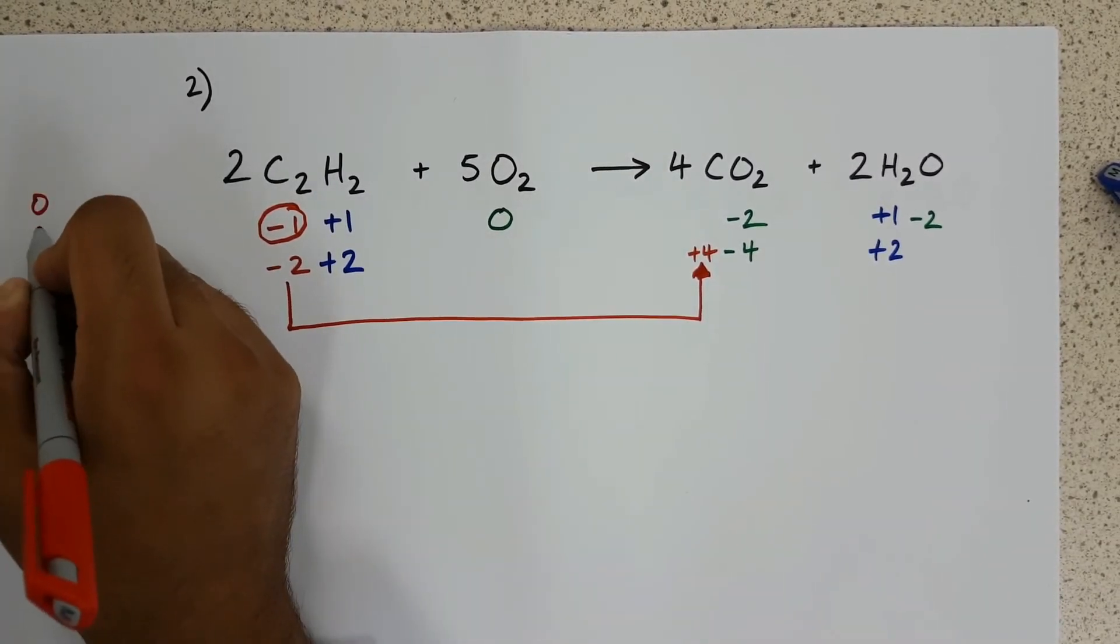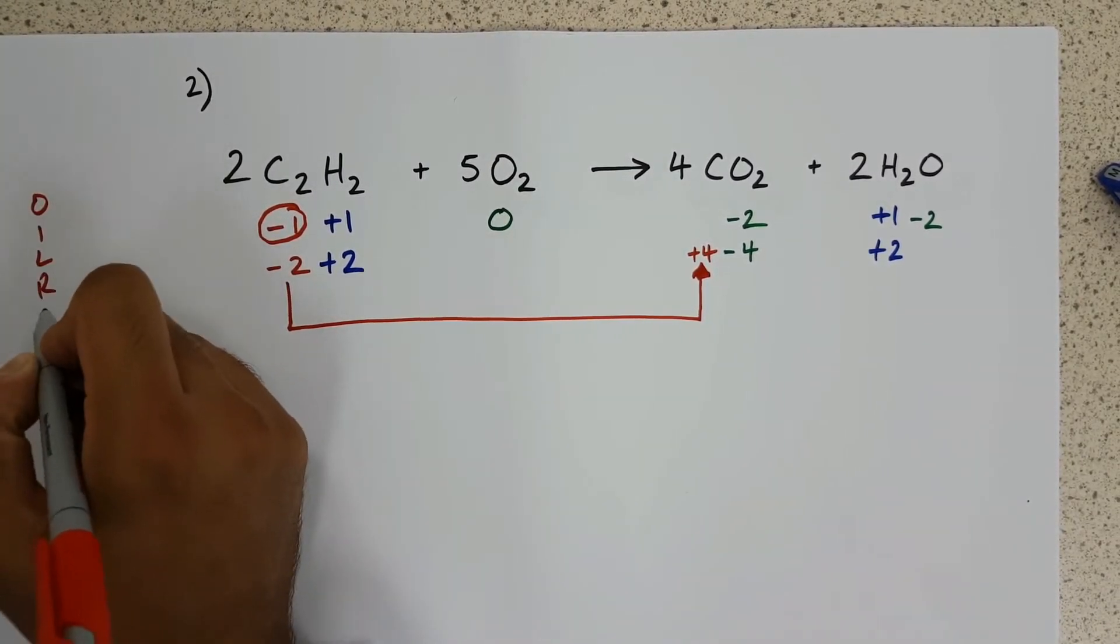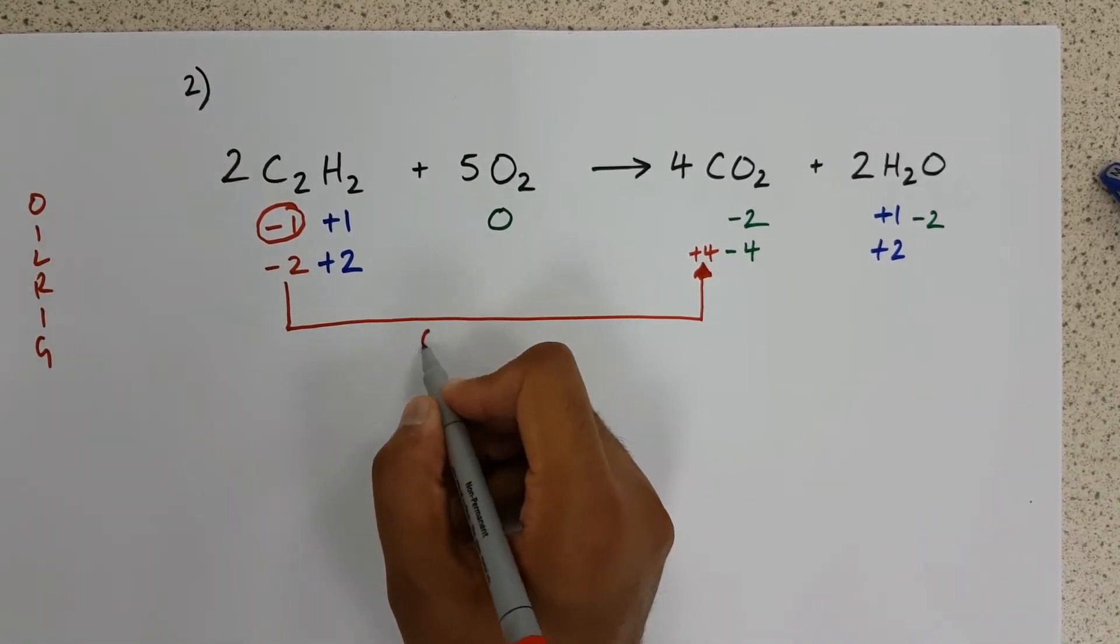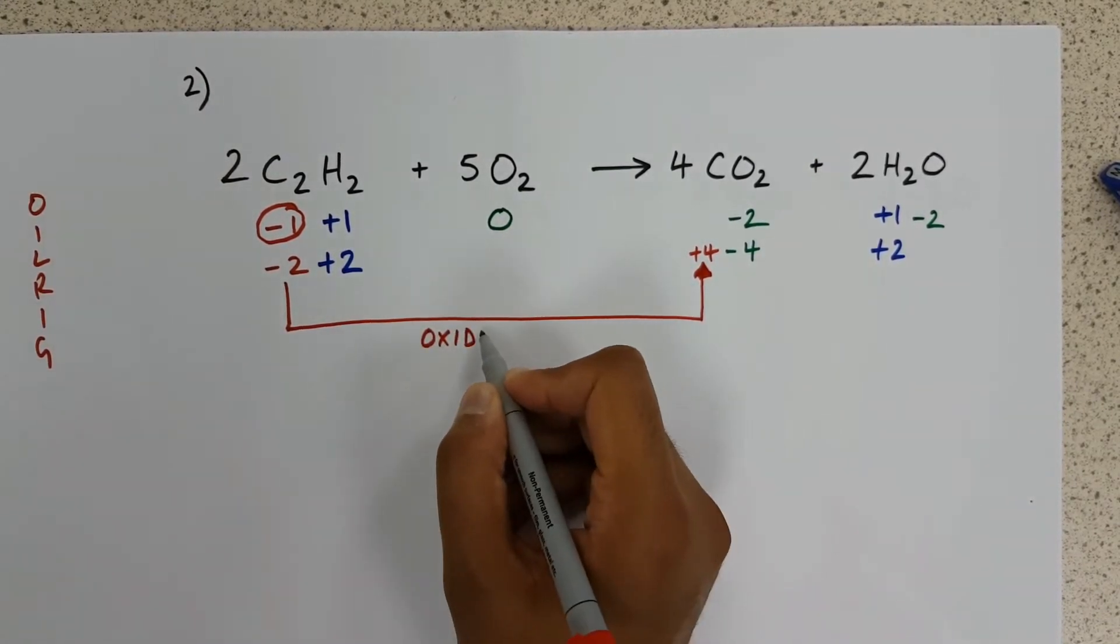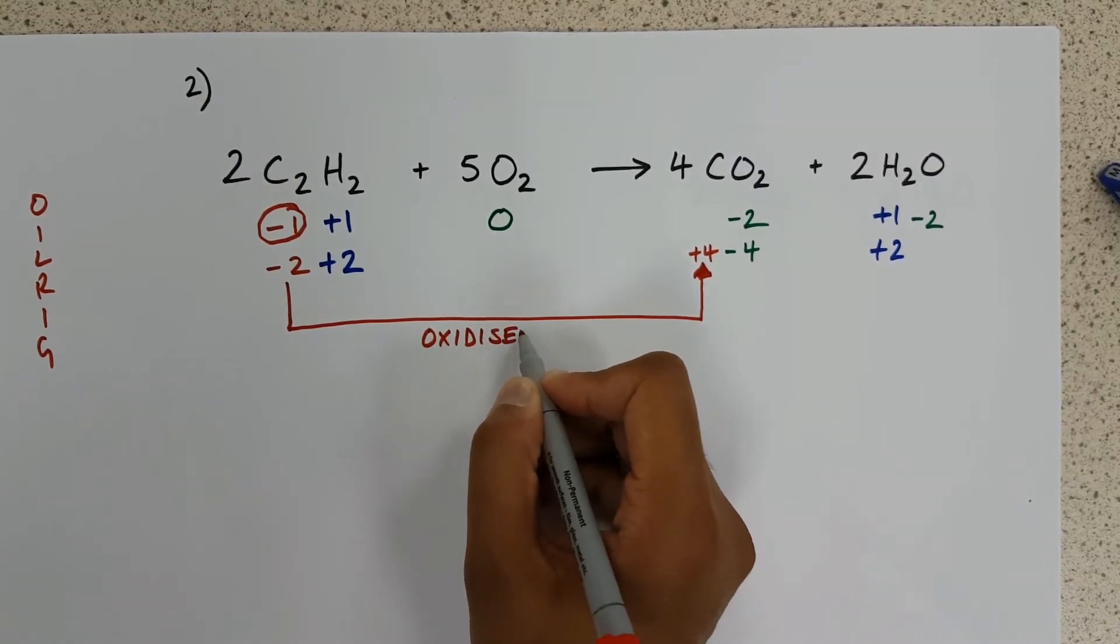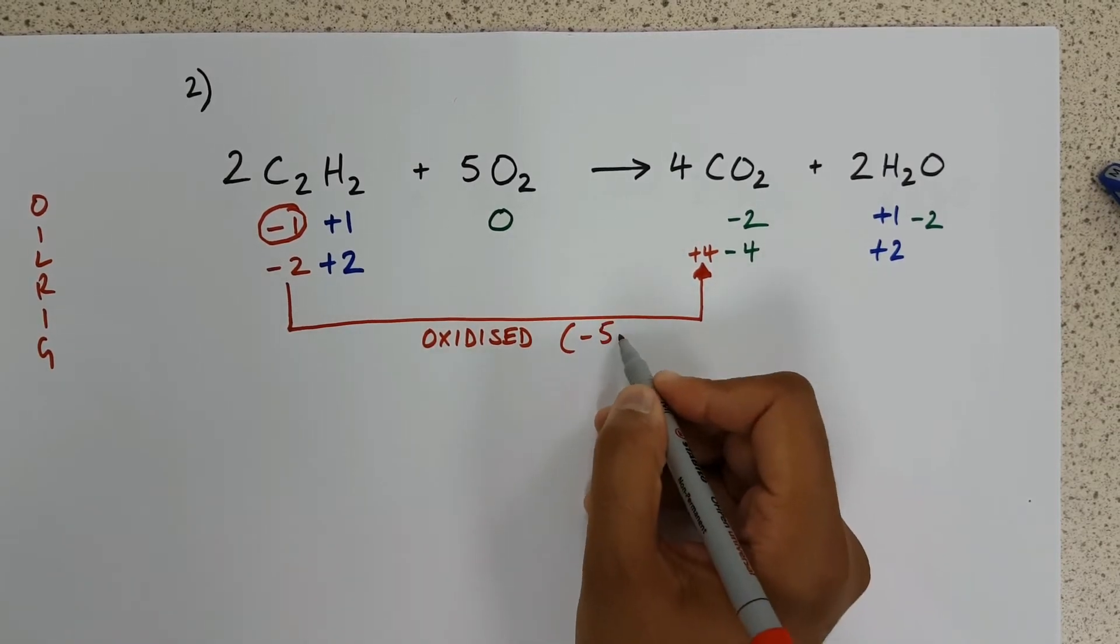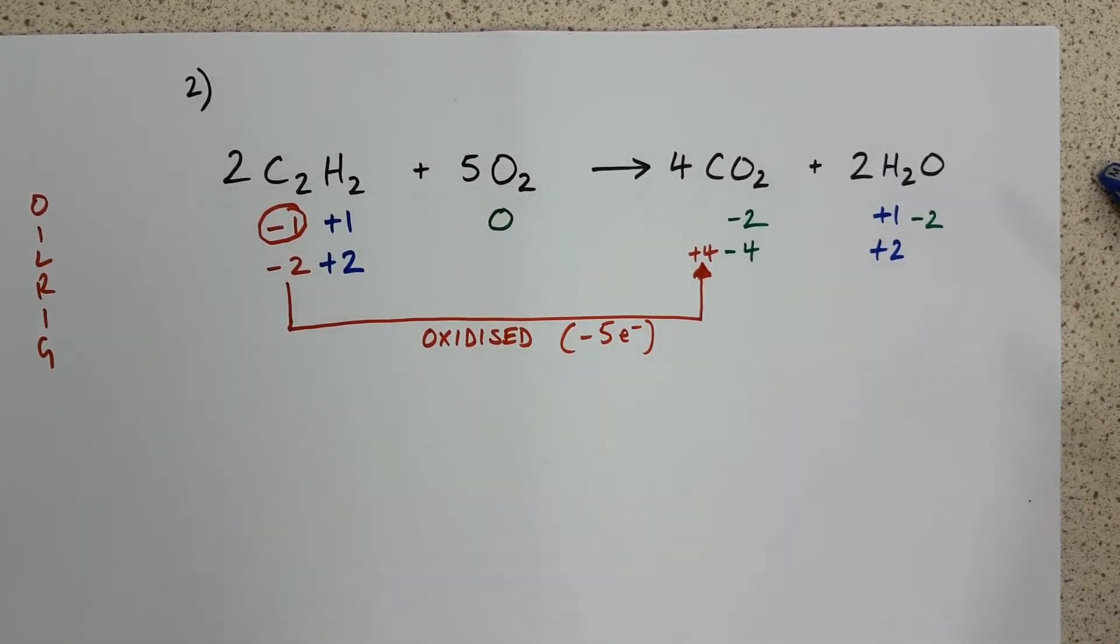Oil rig, as a reminder, oxidation is loss of electrons. Therefore, this has been oxidized. And in brackets, I'm going to make a note that we have lost five electrons, to go from minus one to plus four.